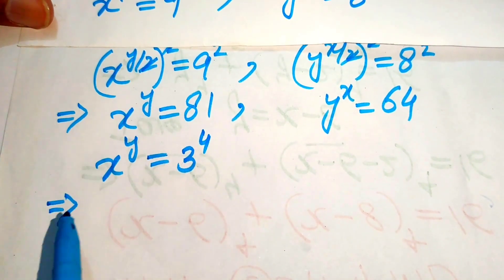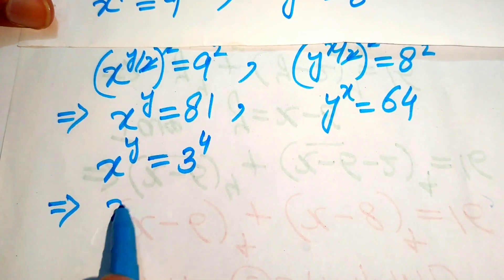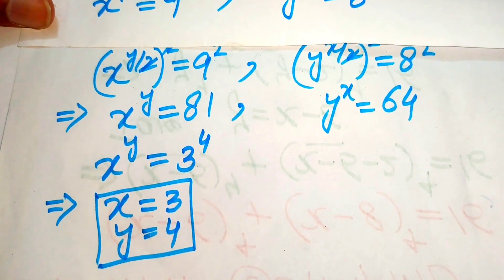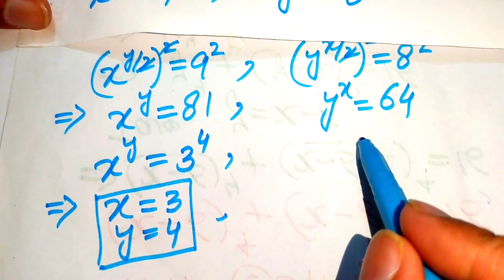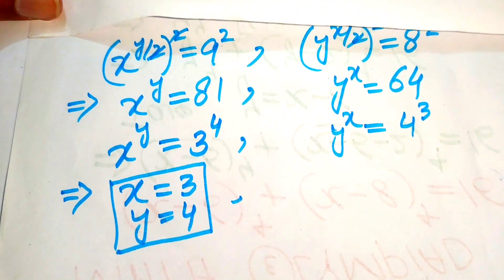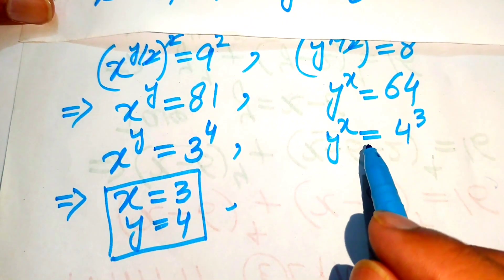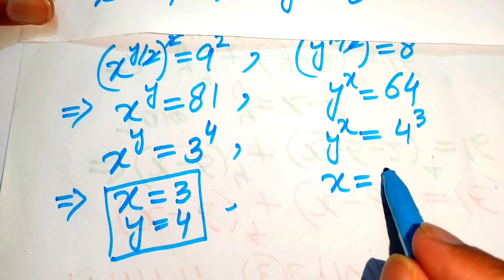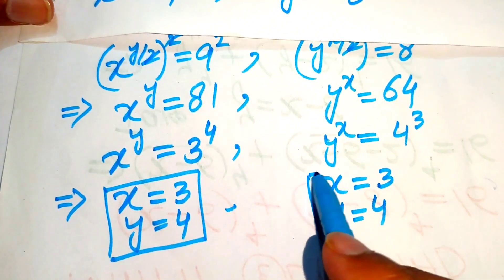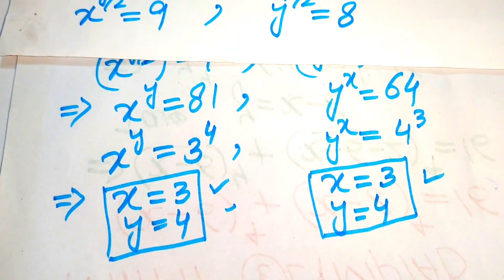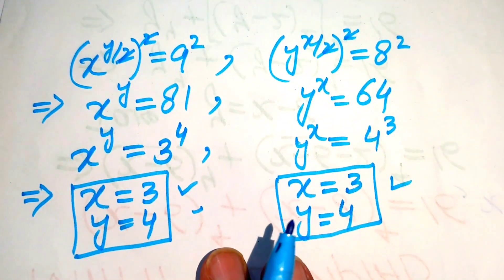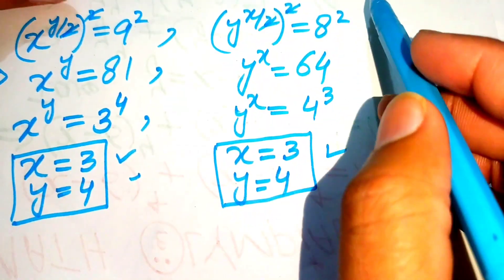Comparing base with base and exponent with exponent, we get x equals 3 and y equals 4. Similarly, 64 equals 4 to the power of 3, and comparing again gives x equals 3 and y equals 4. Since both solutions match, x equals 3 and y equals 4 is the only solution of the given question.